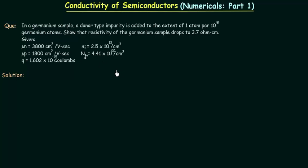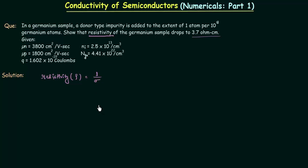Let's move to the solution. We have to find out the resistivity of the germanium sample, and that should be 3.7 ohm centimeter. We already know the formula for conductivity, and we know that resistivity rho is given as 1 divided by conductivity. So we only need to find out the conductivity, and then we can easily calculate the resistivity.